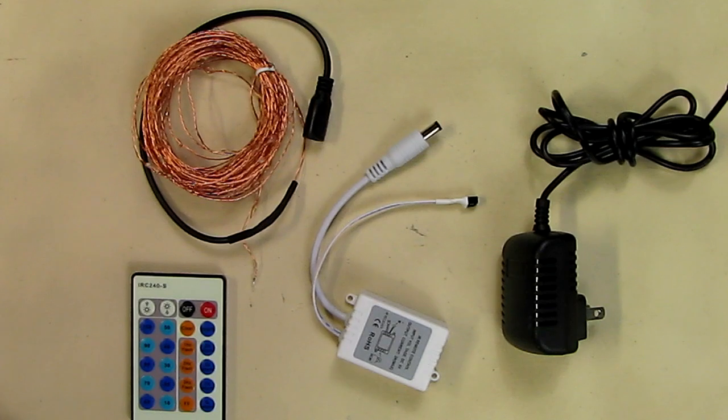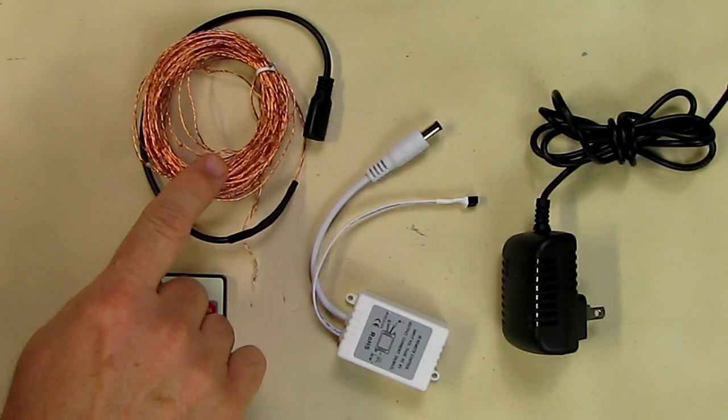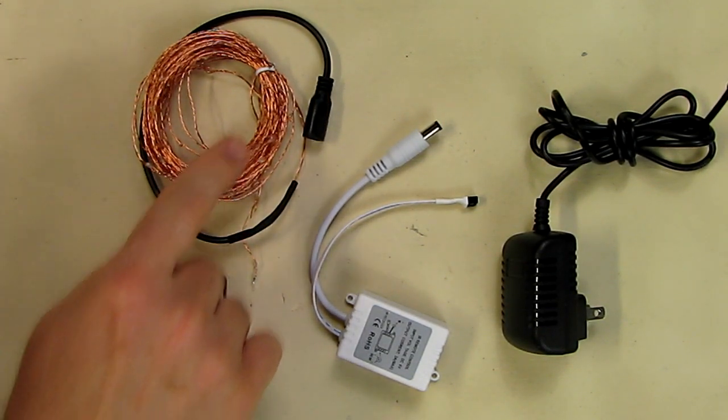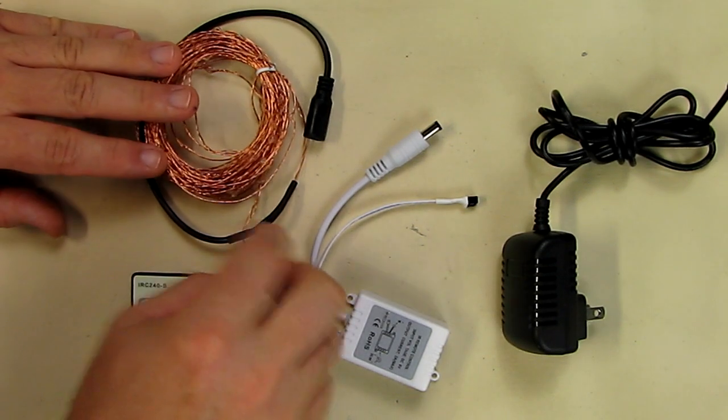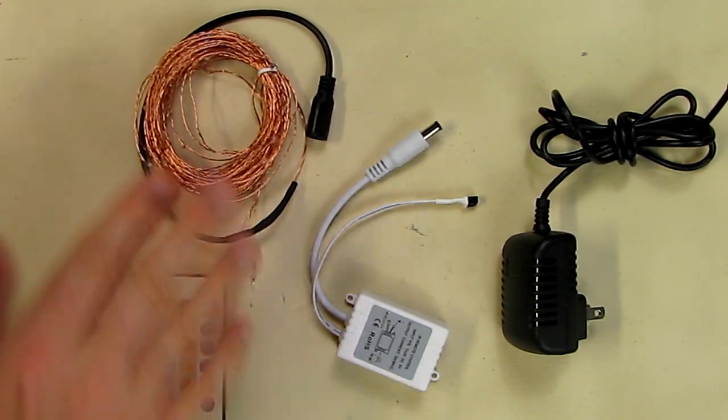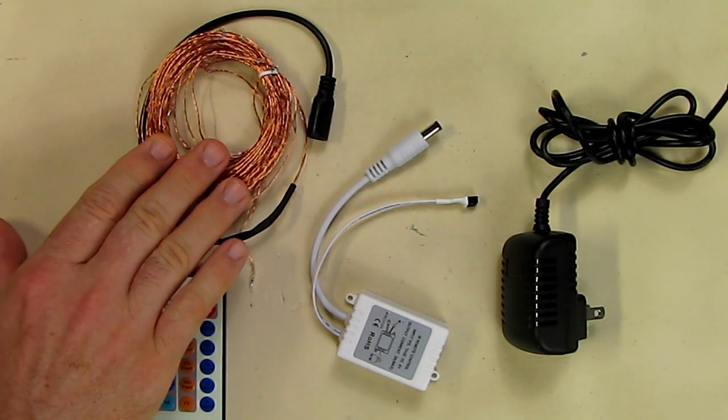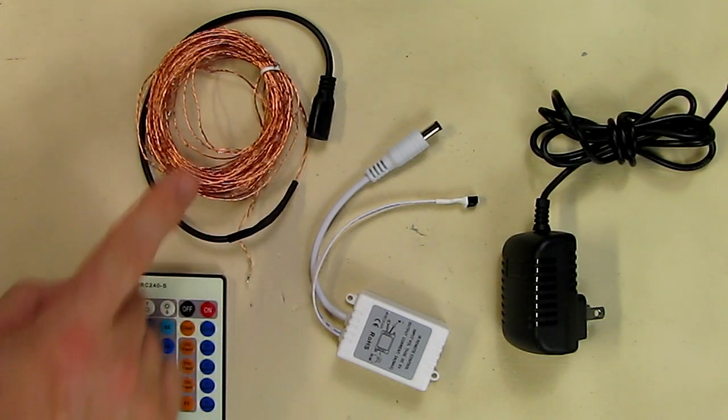Here's what you get with the product: 33 feet of copper wire with starry string lights in varying colors. It's rated for indoor and outdoor use with an IP65 rating, so you can't immerse it in water, but it'll handle rain, splashes, and humidity.